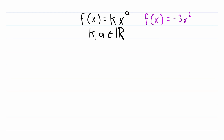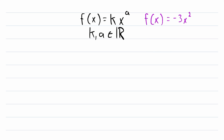Remember that in a power function, the variable is being raised to a constant power, as opposed to exponential functions. In an exponential function, we have a constant being raised to the power of a variable, and we'll talk more about exponential functions in another lesson. So again, in a power function, the variable is being raised to a power.